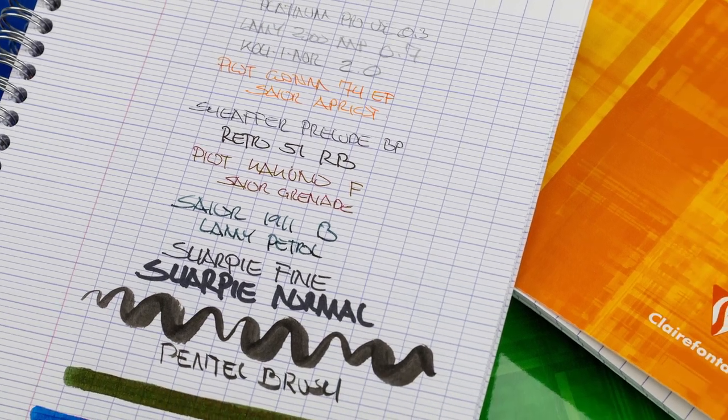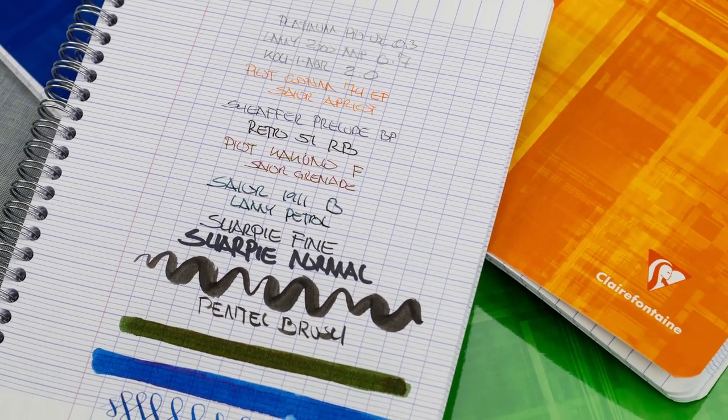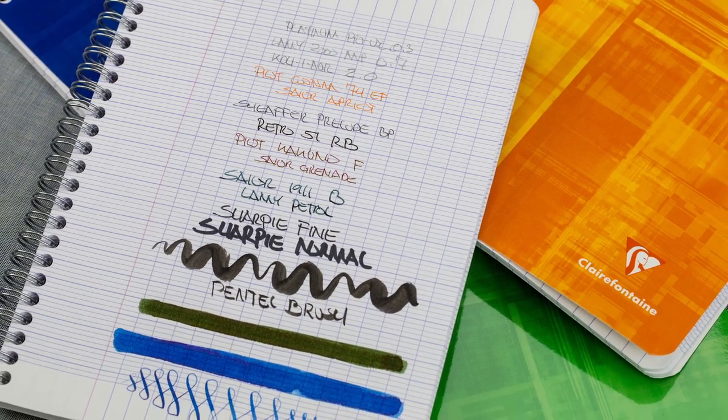So there we go, the Clairefontaine French ruled paper comes in a variety of different notebooks. Go check them out at AndersonPens.com.